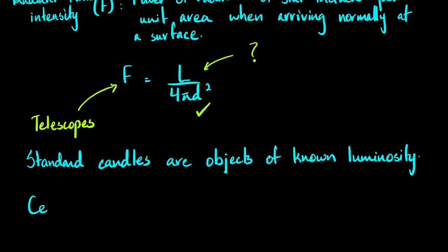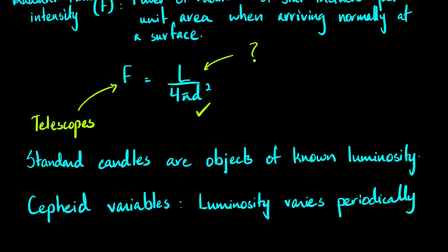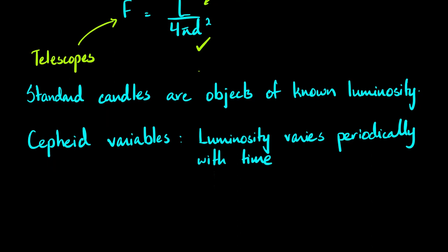One of these standard candles is called Cepheid variables. The special thing about these stars is that their luminosity varies periodically with time. Unlike the Sun, for example - the Sun has the same brightness always whenever we can see it. The Sun's brightness is not changing. But unlike the Sun, a Cepheid variable is a star which has a luminosity varying periodically with time.